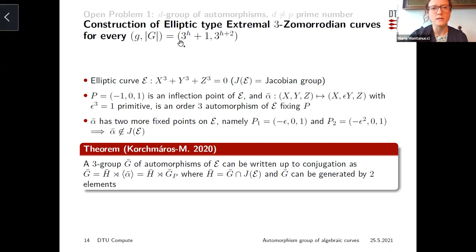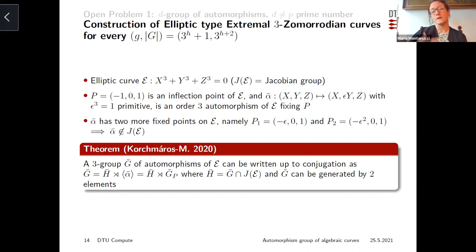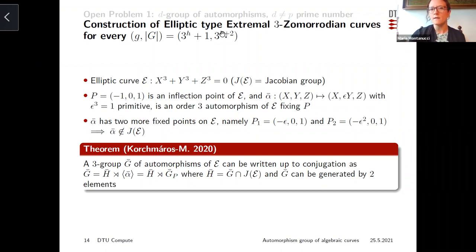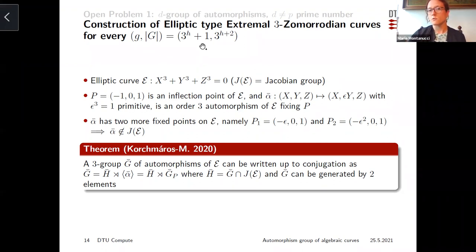I would like to show a method to construct extremal 3-maximal curves of elliptic type for every possible genus. If you want such a curve, you want genus g = 3^h + 1 and a group of order 3^{h+2}. You want it to be of elliptic type — an element of order 3 in the center such that the quotient curve is elliptic. This is equivalent to starting from an elliptic curve, fixing an automorphism group Ḡ of order 3^{h+1}, and constructing a Kummer extension of degree 3 such that these automorphisms lift in exactly three ways — giving a group of the right order and, with the right ramification, forcing the genus to be the desired one.